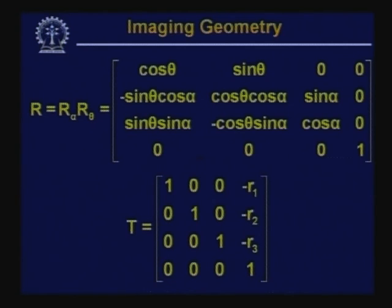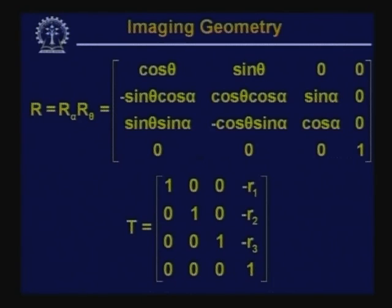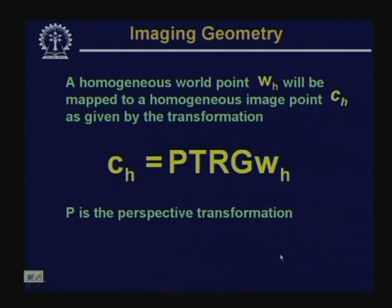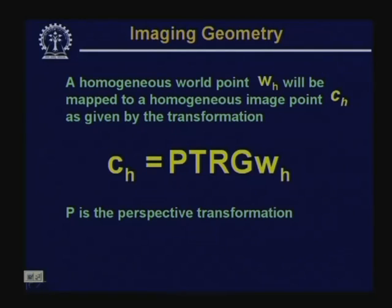The rotation matrices R_theta and R_alpha can be combined into a single transformation matrix R, which is the product of R_alpha and R_theta. Once we have these transformation matrices, applying first translation G, then rotation R, then translation T aligns the camera coordinate system with the 3D world coordinate system. Finally, applying the perspective transformation gives us the image coordinate of any 3D world point.